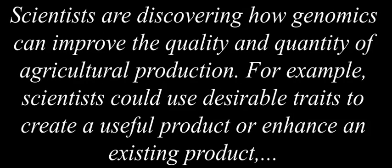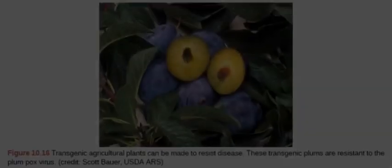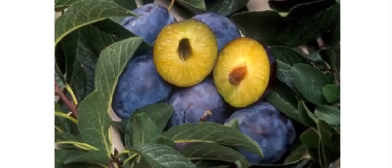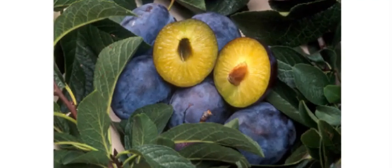Scientists are discovering how genomics can improve the quality and quantity of agricultural production. For example, scientists could use desirable traits to create a useful product or enhance an existing product, such as making a drought-resistant crop more tolerant of the dry season. Transgenic agricultural plants can be made to resist disease. These transgenic plums are resistant to the plum pox virus.